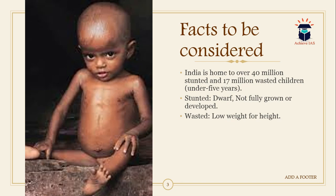Before starting, let's consider some important facts. India is currently home to 40 million stunted children and 70 million wasted children. 'Stunted' refers to children who have not grown or fully developed as per their age — we can observe dwarfness in such children. 'Wasted' refers to children with low weight relative to their height. These are important determinants of children's health and welfare.